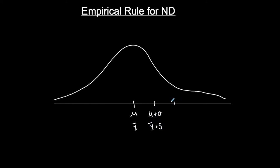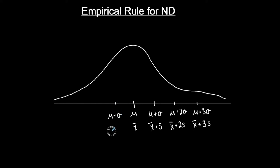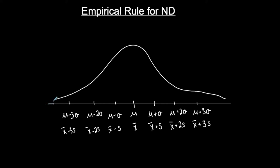If I want the data value two standard deviations above the mean, I take the mean and add two standard deviations: μ + 2σ. Three standard deviations above: μ + 3σ. Going below the mean: one standard deviation below is μ − σ, two standard deviations below is μ − 2σ, and three standard deviations below is μ − 3σ, or x-bar minus 3s.